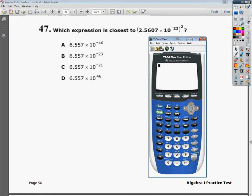And then we go ahead and we just key the number in. 2.5607 times 10 to the negative 23rd power raised to the second power. And Enter.